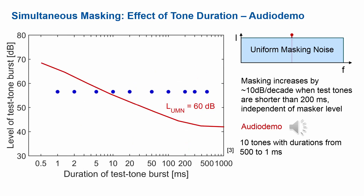I've also brought you a demonstration of this effect. There are 10 tones played with shorter and shorter duration. We start off with 500 ms and the duration is shortened in steps all the way down to 1 ms. The demonstration is played first without noise and then a second time with the noise, and you can count how many tones you can hear in each situation. You can hear all the tones without the noise, but with the noise present, you will hear something like 7 or so of the tones.